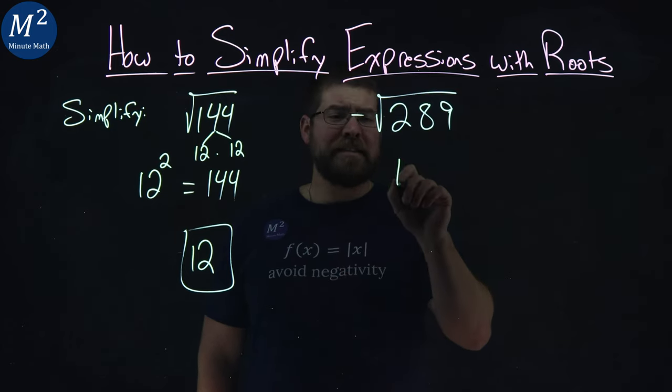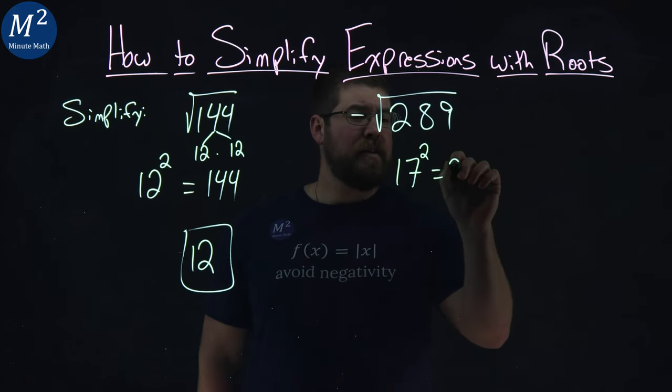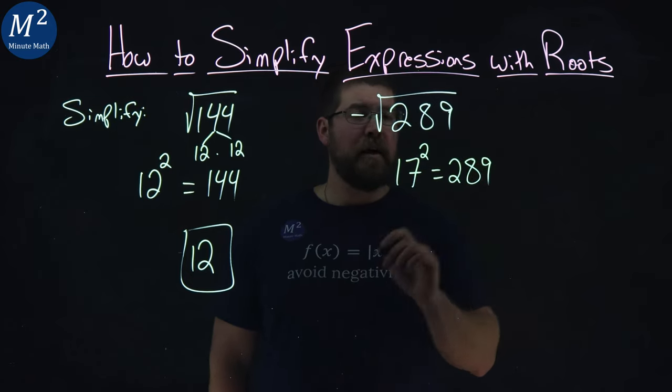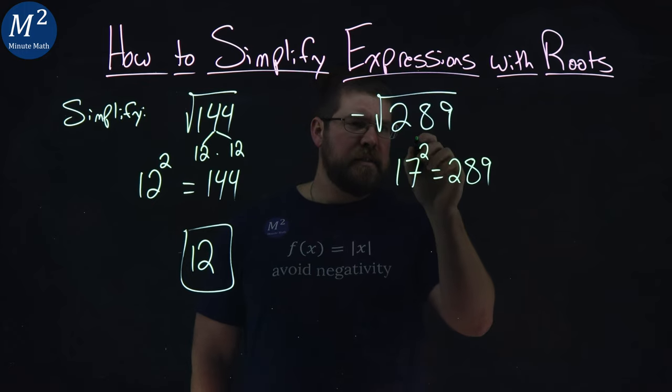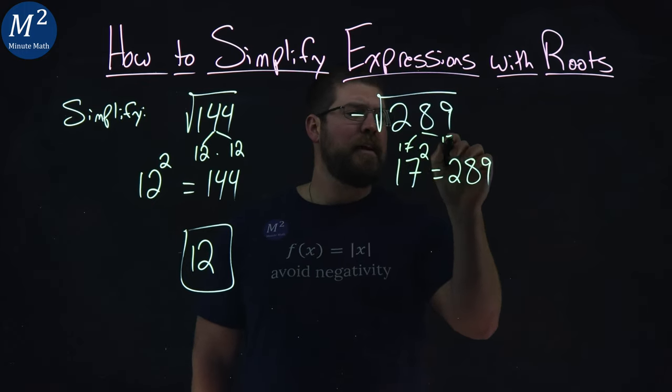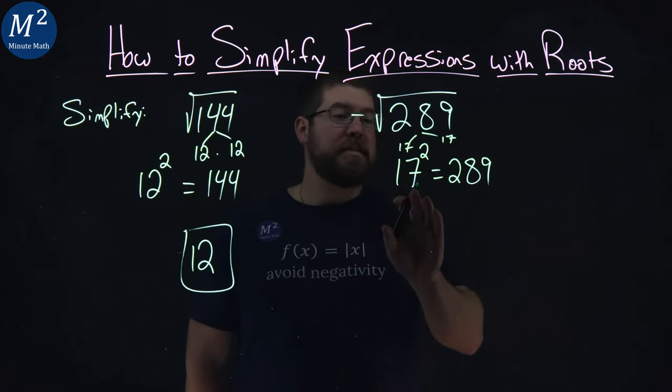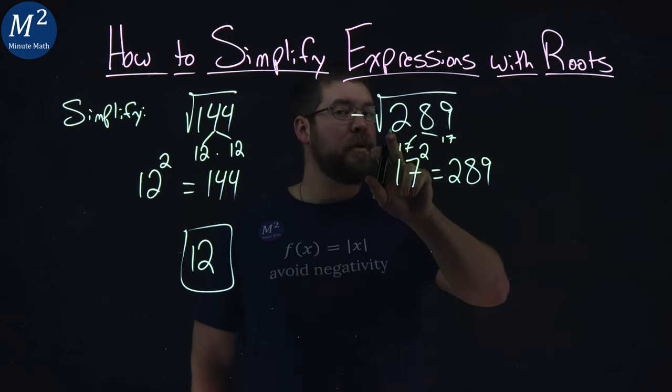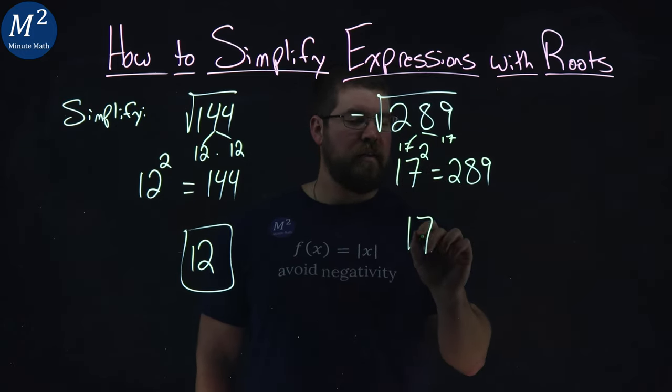And that's going to be 17. 17 squared is 289, or 17 times 17. So since 17 squared is 289, the square root of 289 is 17.